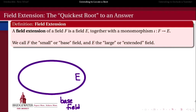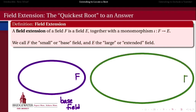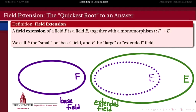Here we're going to talk about the definition of a field extension — I call it the quickest route to getting an answer. A field extension of a field F is a field E together with a monomorphism from F to E. In other words, we start with a base field F and construct a larger extension field E. The idea is that E is somehow bigger than F, but the language of monomorphisms is suggestive because in general we can't think of F as exactly being a subset of E — but we can think of finding a copy of F inside of E. This monomorphism's job is to be a function from F into E such that the image of F is a subfield inside of E.